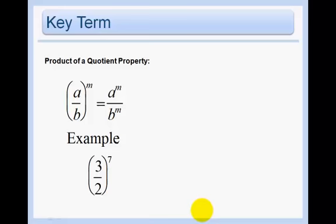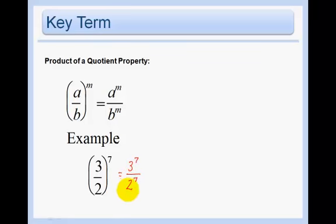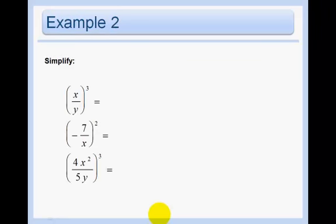Another property: a over b, all to the nth power. When the a over b is in parentheses, we raise the numerator to the power and the denominator to the power. So in this example we get 3 to the 7th over 2 to the 7th, and that cannot be simplified further because we don't have the same bases. Similarly, x cubed over y cubed — no same bases, so that's the answer.